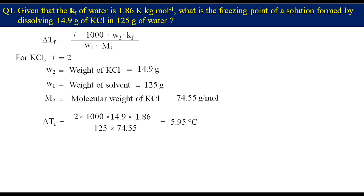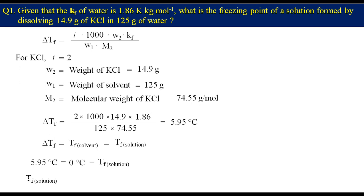We know that delta Tf equals Tf(solvent) minus Tf(solution). So 5.95 equals 0 minus Tf(solution), giving a freezing point of the solution equal to −5.95°C.